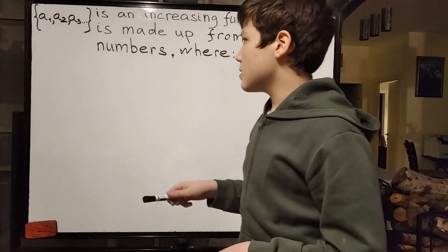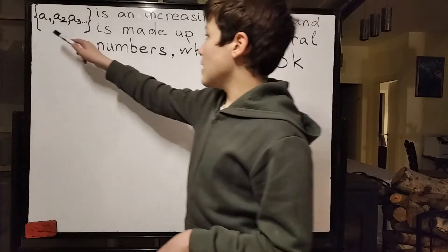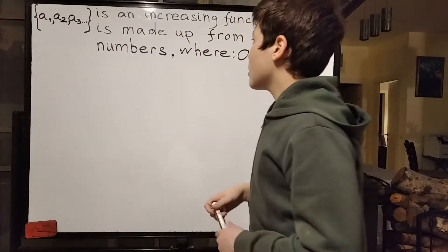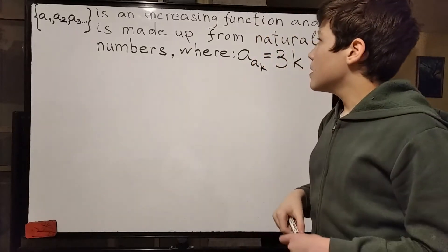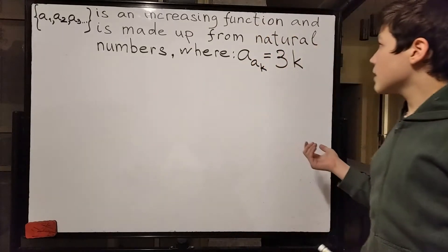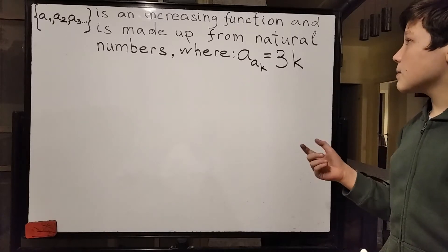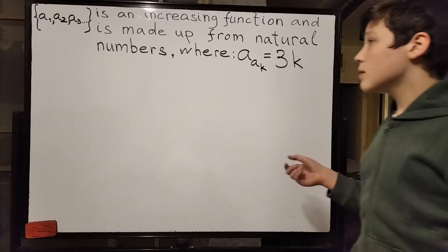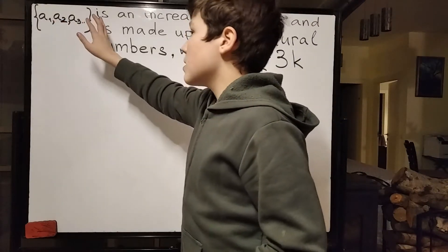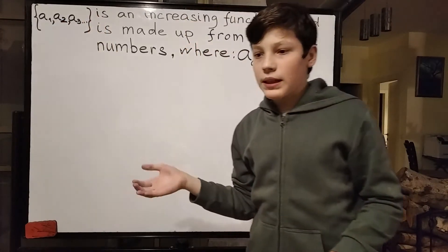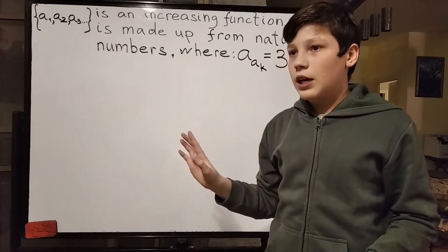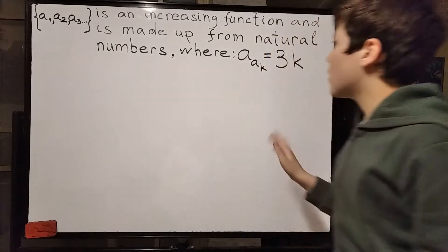We have this series a1, a2, a3, and all the way on to infinity — it's a series — and is made up from natural numbers. So each one of those numbers cannot be something like negative 2, a half, or square root of 2. No, all natural numbers: 1, 2, 3, 4, and so on.